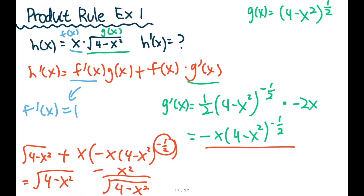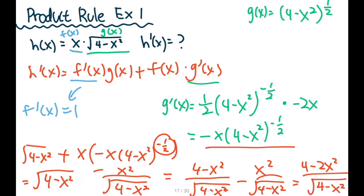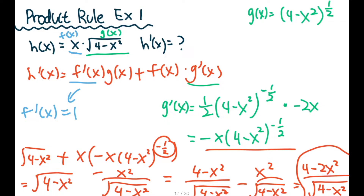Can we simplify it further? Of course we can. So if we try to get a common denominator, this would actually become 4 minus x squared over square root of 4 minus x squared for the first term. The second term would still be x squared over square root of 4 minus x squared. Simplify it: we get 4 minus 2x squared over square root of 4 minus x squared as our final answer. So this is an example of a product rule mixed with some chain rule. I will talk about chain rule in the other video.